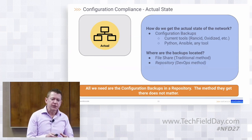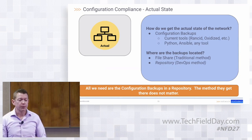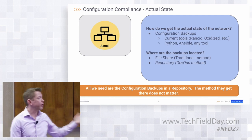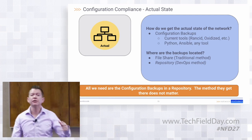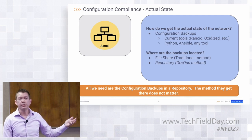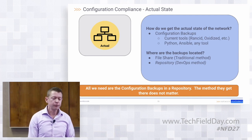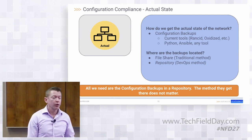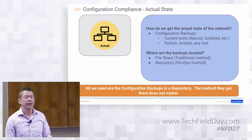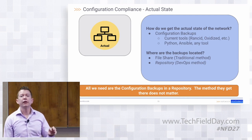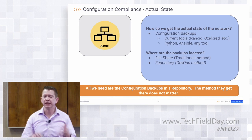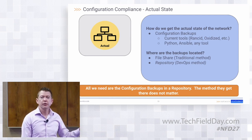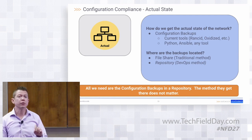Drilling into each piece: for the actual state, we get it from configuration backups, the most common way. You potentially already have this in your environment, whether it's RANCID, Oxidized, SolarWinds, or whatever tool you're using. We could also use Python, Ansible, or the Nautobot platform itself. Backups are commonly out on a file share somewhere on the network. The only requirement when automating this capability is that the backups are stored in a repository — whether it's GitHub or Bitbucket, it doesn't matter, it just needs to be a repository of some form. This is a relatively simple step, and you probably already have this component — you just need to make sure those backups are in a repository.